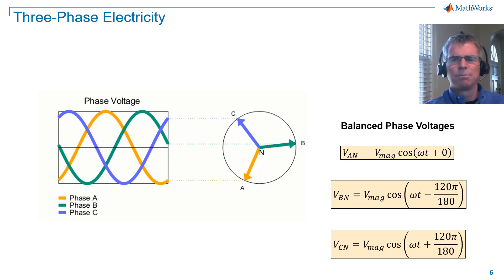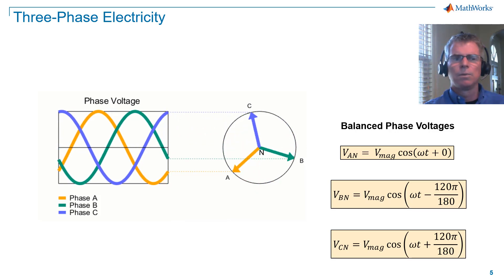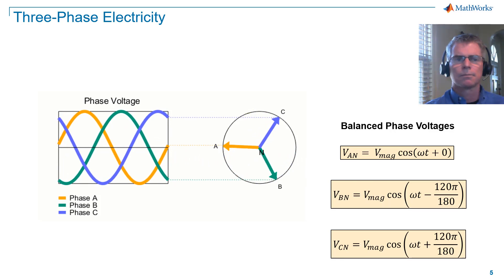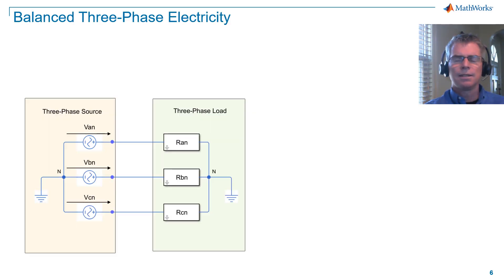We'll now take a look at a simple three-phase electrical network, which we will use to give more insight on network behavior. In this system, I have a three-phase voltage source connected to a three-phase load. The load consists of resistors in this case.